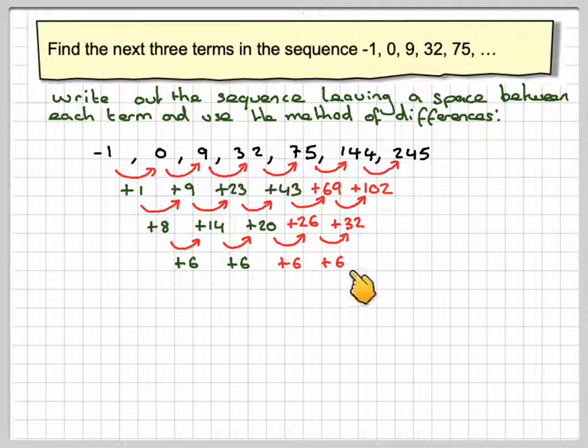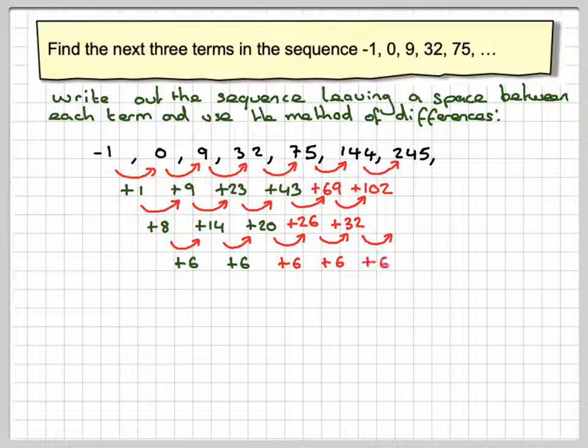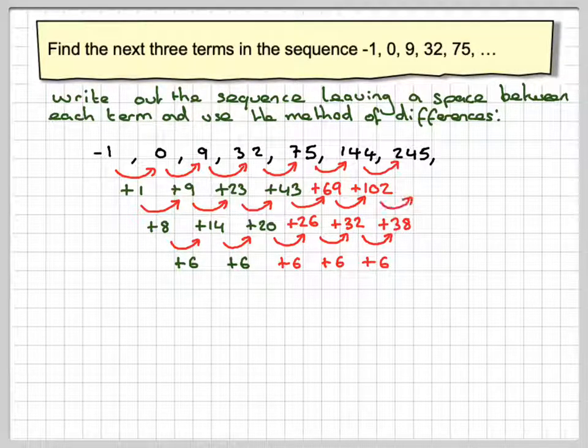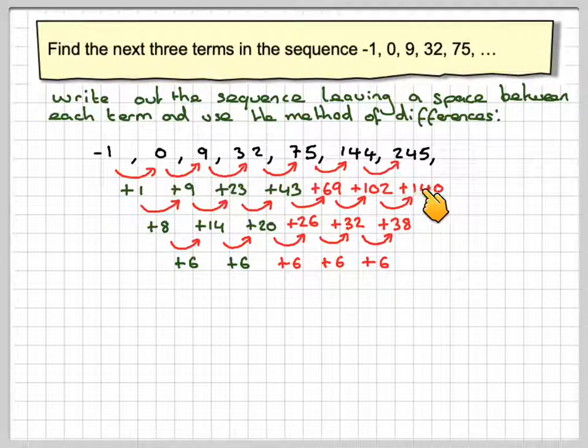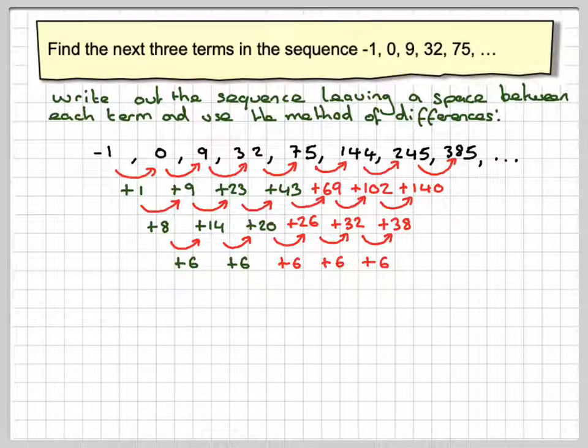Going back down here, we'll now add another 6 to 32. We're going to get 38. 102 plus 38, we're going to get 140. 245 plus 140 will give me 385. And then the sequence will carry on.